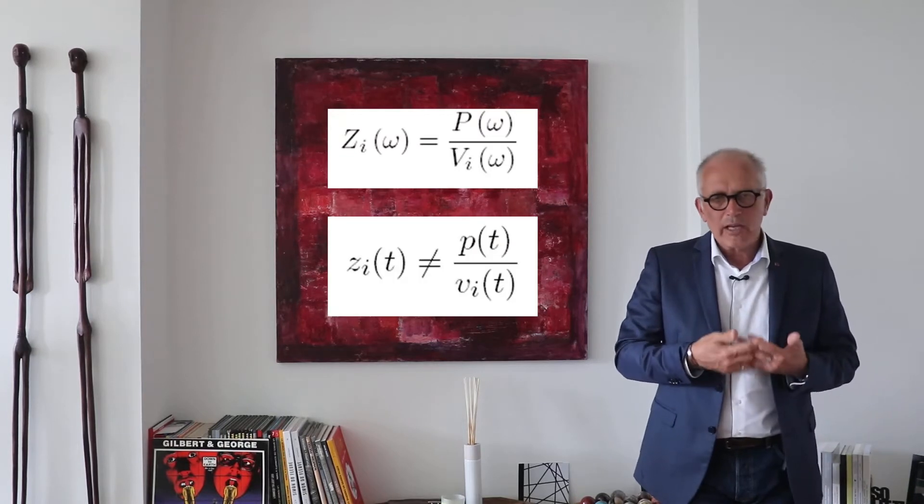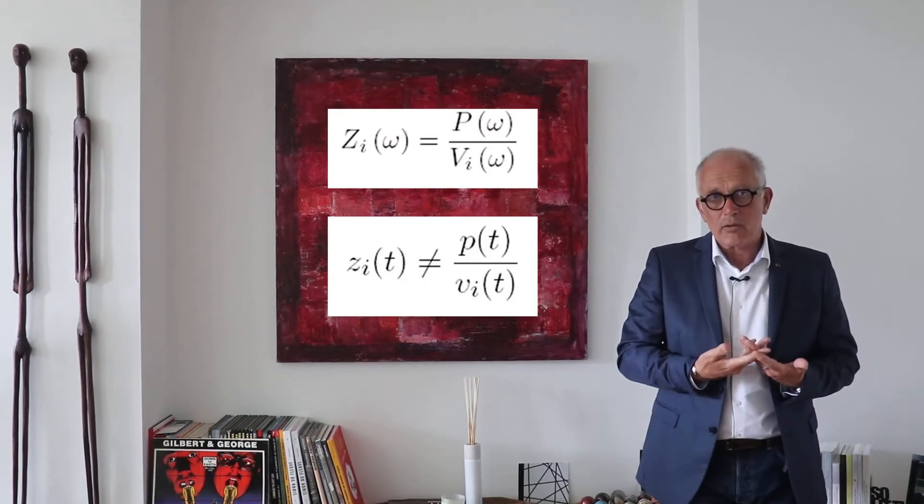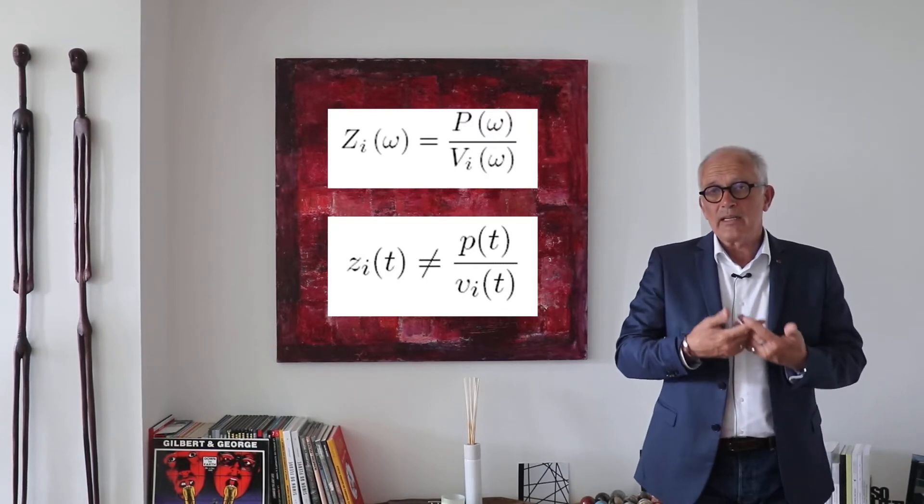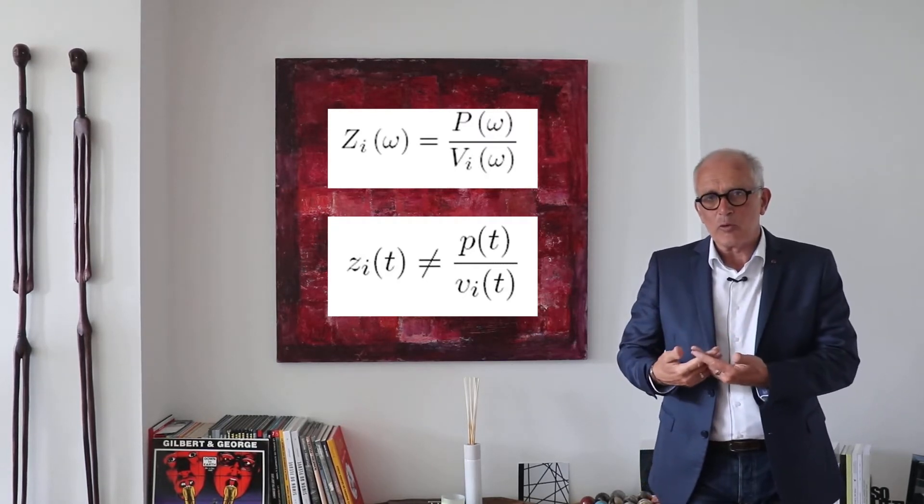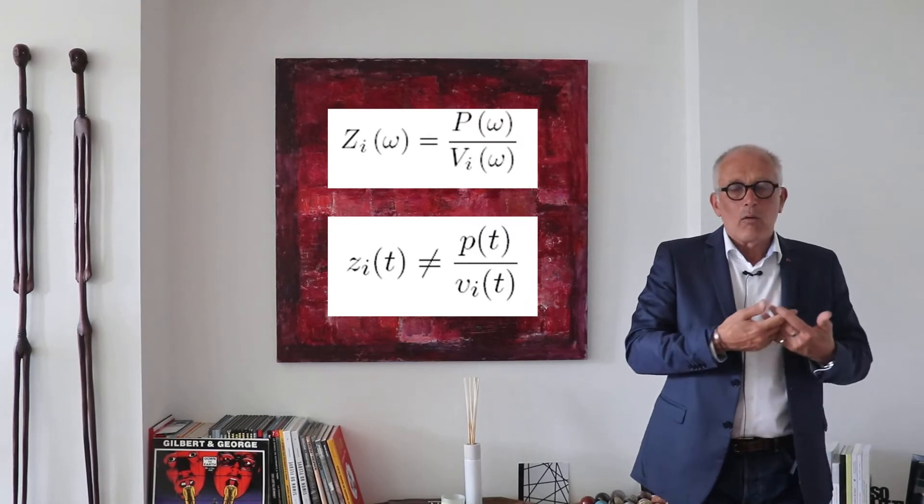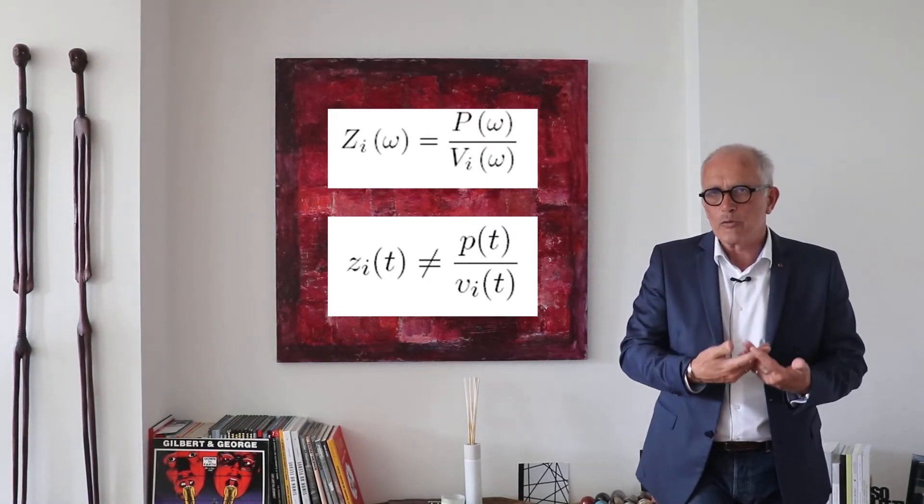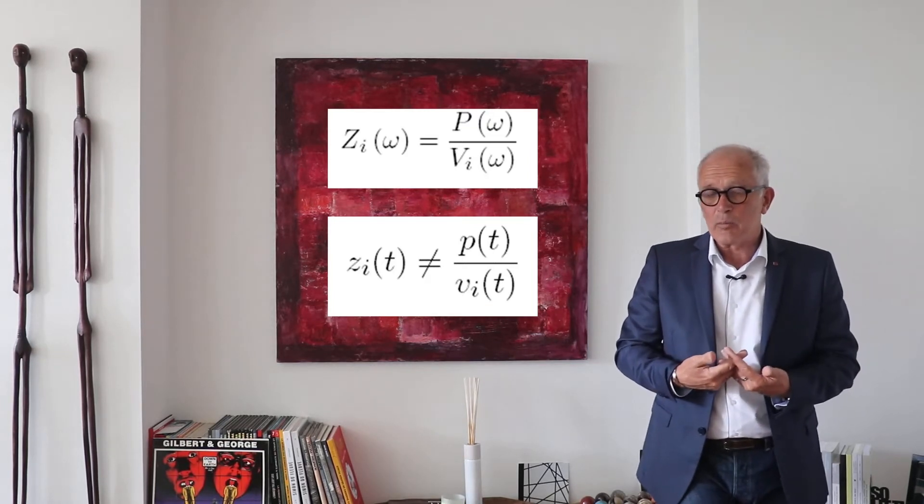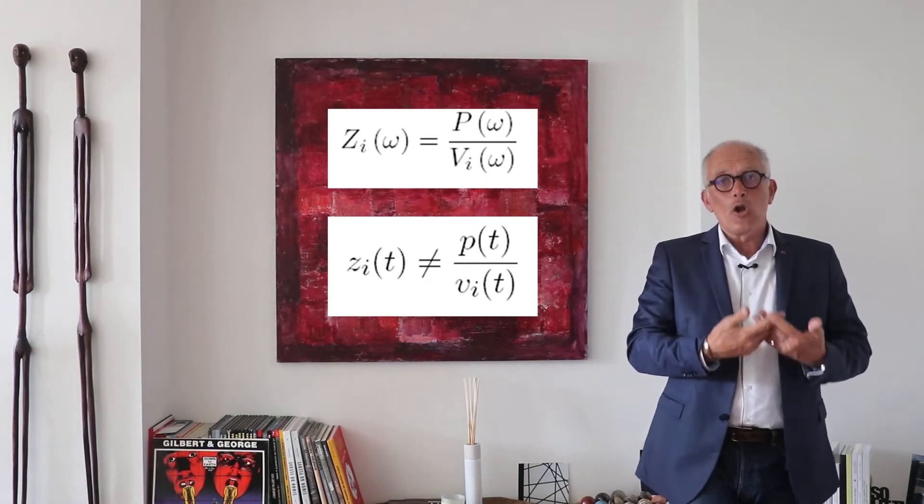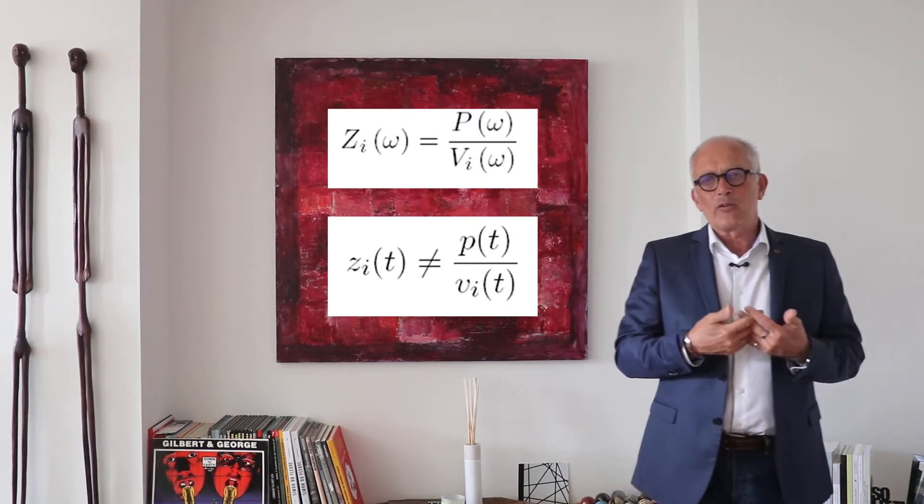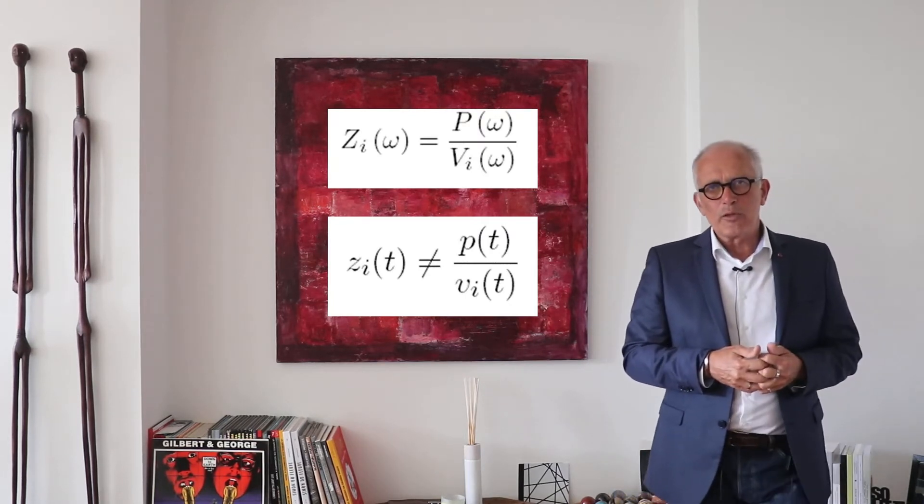Remember that we are talking about spectra and that the concept doesn't make any sense in the time domain. You cannot take, or at least it doesn't mean anything, to take the ratio of the pressure to velocity in the time domain, but it has a lot of sense in the frequency domain.